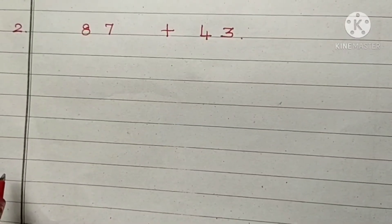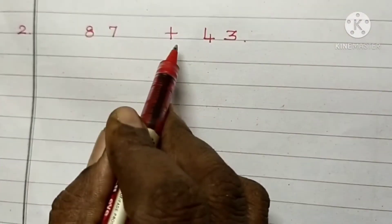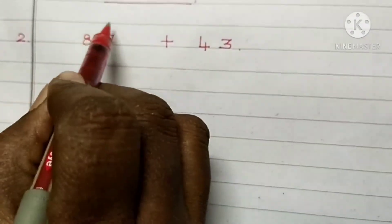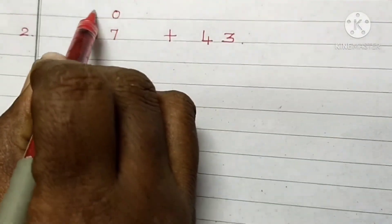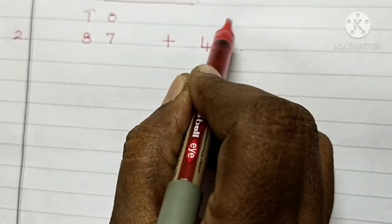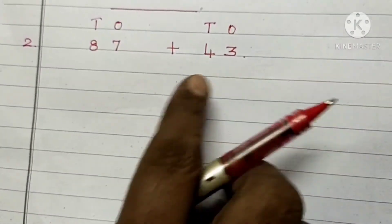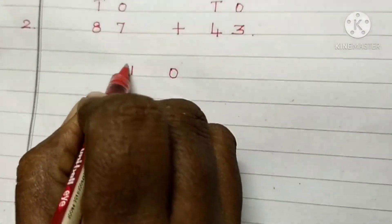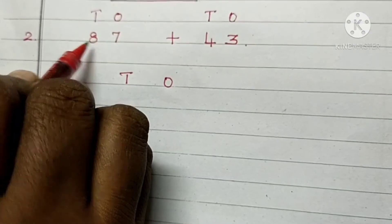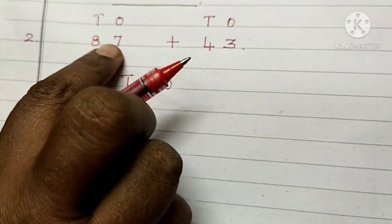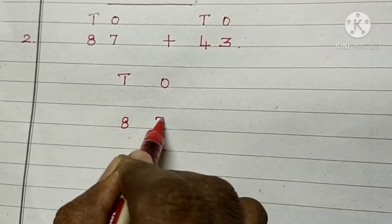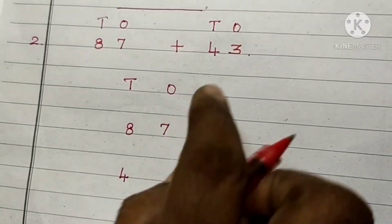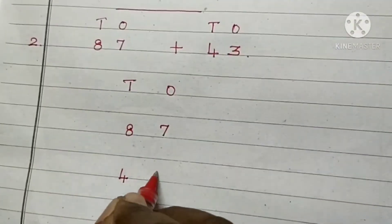Go to the next example. 87 plus 43. First, put the place value for the given number. 1's, 10's. Arrange the numbers according to their place values. How many 10's are there? 8 tens. How many 1's are there? 7 ones. How many 10's are there? 4 tens. How many 1's are there? 3 ones.